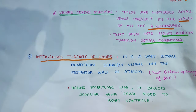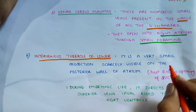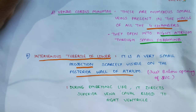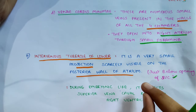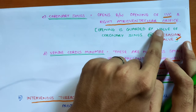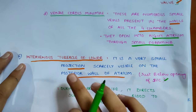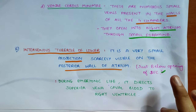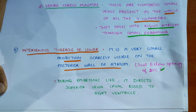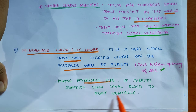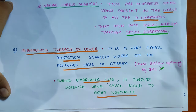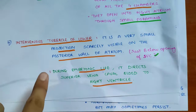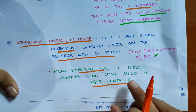On the posterior wall of the atrium, just below the opening of the superior vena cava, there is a tubercle present called the tubercle of Lower. In embryonic life, this tubercle directed the blood from the superior vena cava to the right ventricle, and directed the inferior vena cava blood to the left atrium.